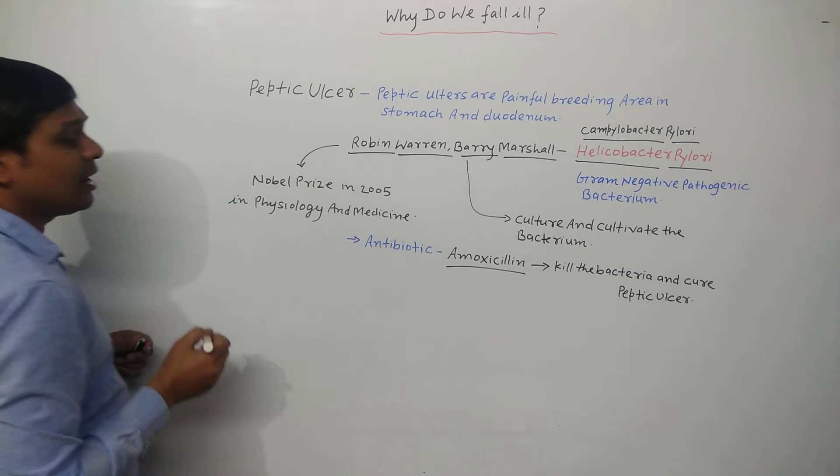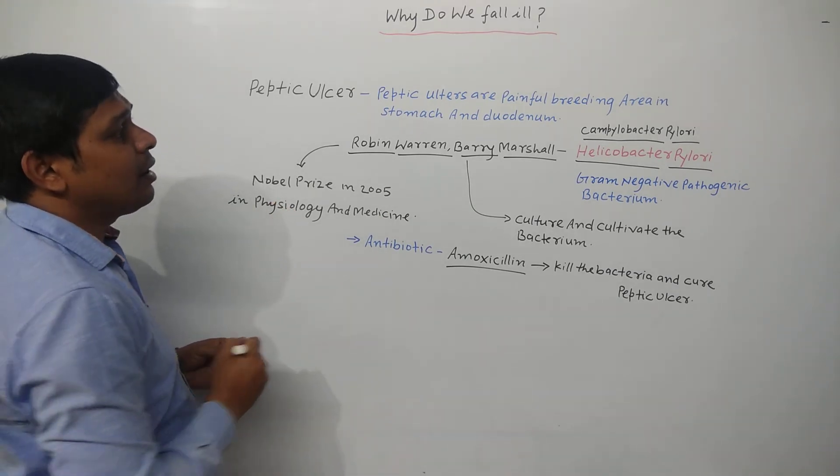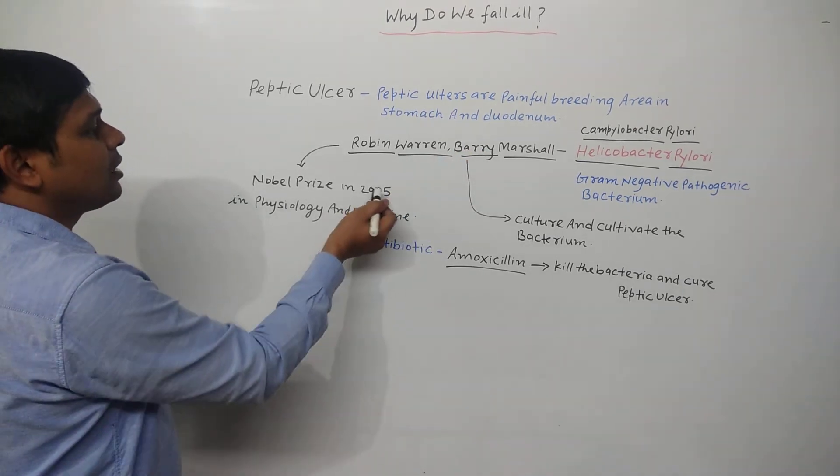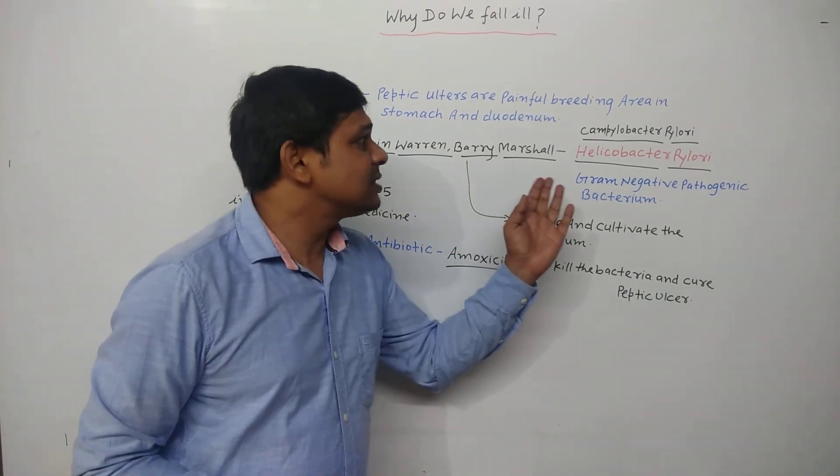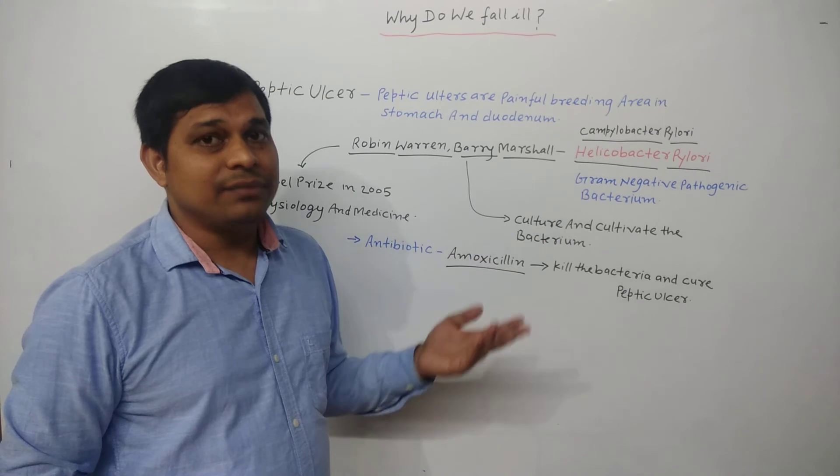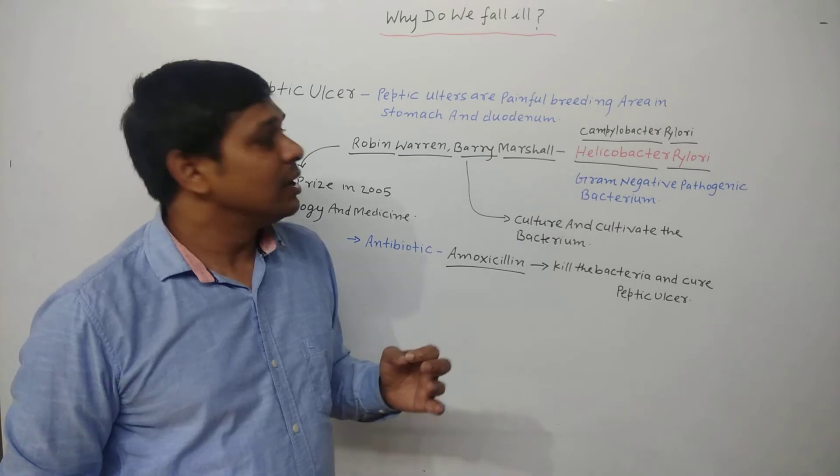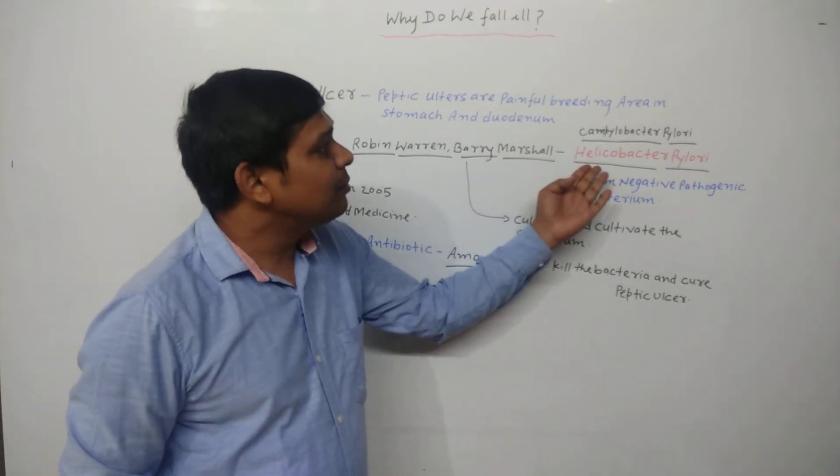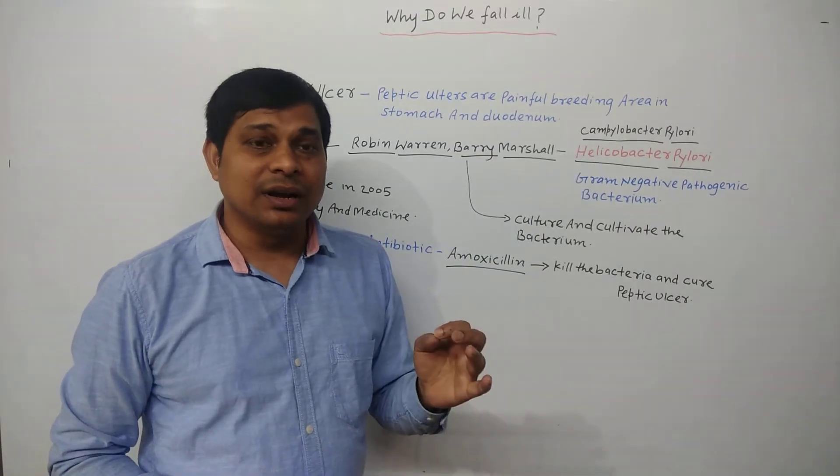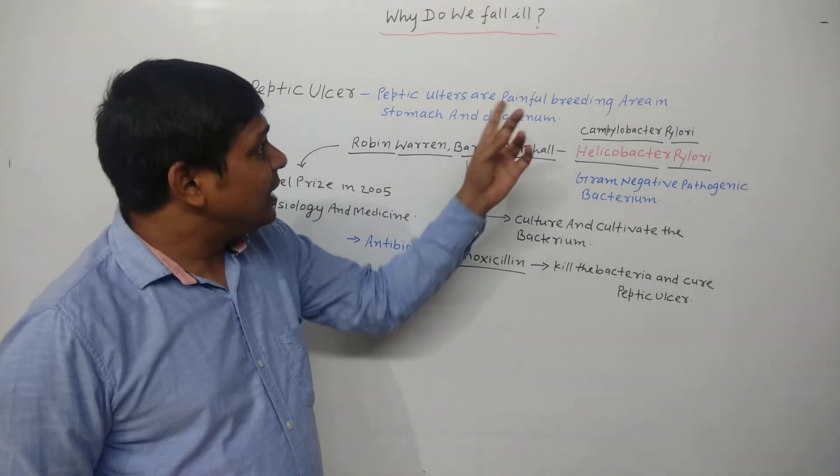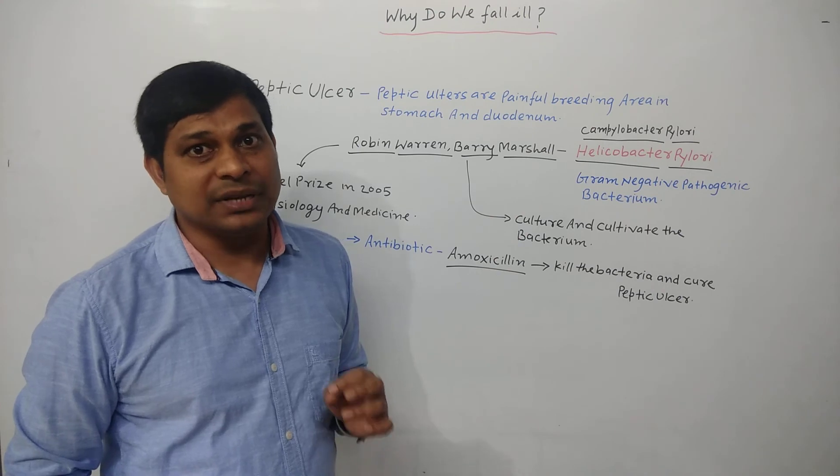Robin Warren and Barry Marshall received the Nobel Prize in 2005 in physiology and medicine for this discovery. So that is peptic ulcer, and this is not due to lifestyle and not due to more secretion of acid or gastric juice in the stomach. It is due to the bacterium Helicobacter pylori, which is present around the bleeding area in the stomach and duodenum in peptic ulcer patients.